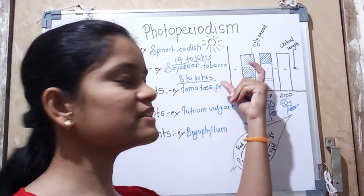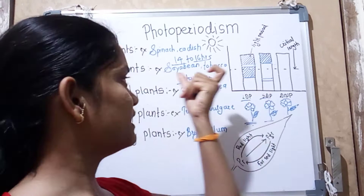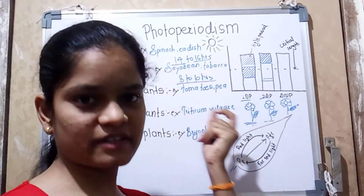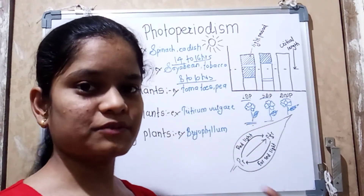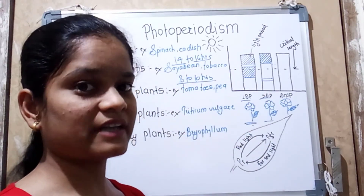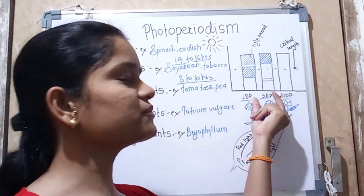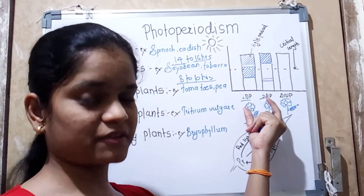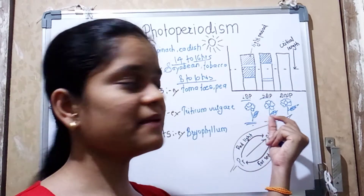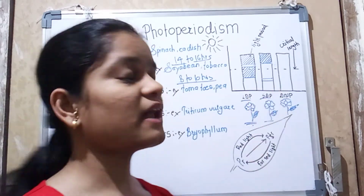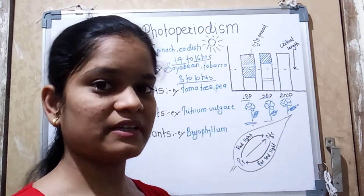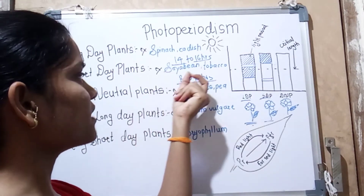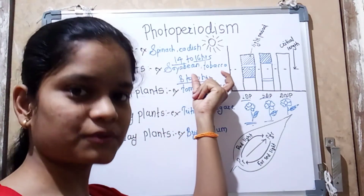A day duration of 40 to 60 hours of light is not required to induce flowering in short day plants — in fact, such conditions prevent their flowering. Ultimately those plants are not found in regions with very long day length. Examples of short day plants are soybean and tobacco.